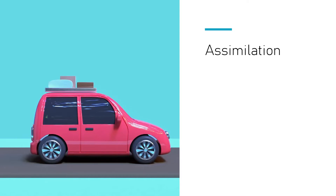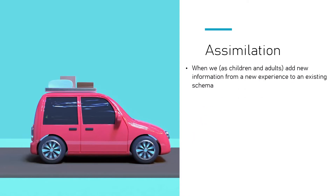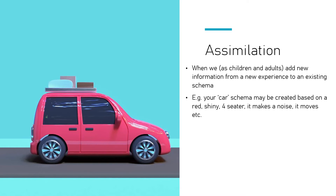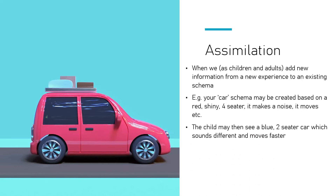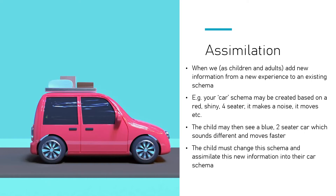Another term to be aware of is assimilation. This is when new information comes into our schema. So we've got a schema about what the world is like and we build that up. For example, you might have a schema about a car. As a young child you experience a few cars — the family car might be red, new and shiny, four seats, makes a noise, mum and dad drive it and it moves. Then as you see more of the world, you see different types of cars — different colours, different amounts of seats, some old and beaten up. They sound different and move differently. So you have to change your schema to assimilate that. That's what assimilation means.